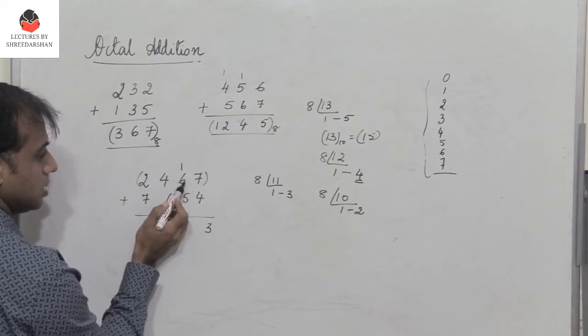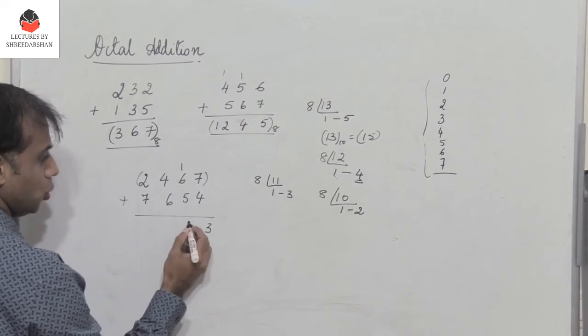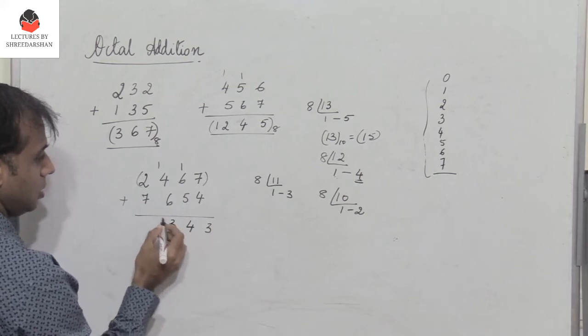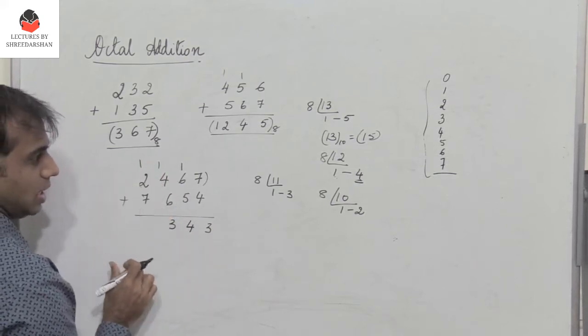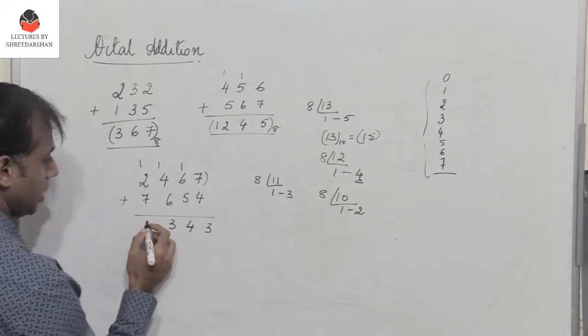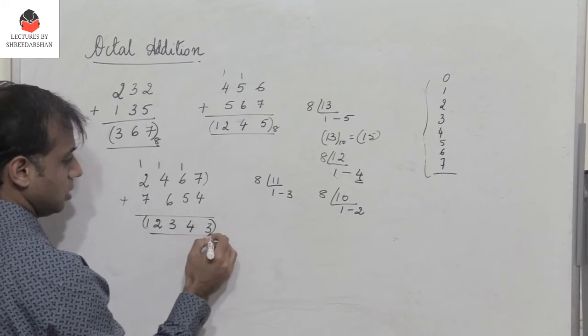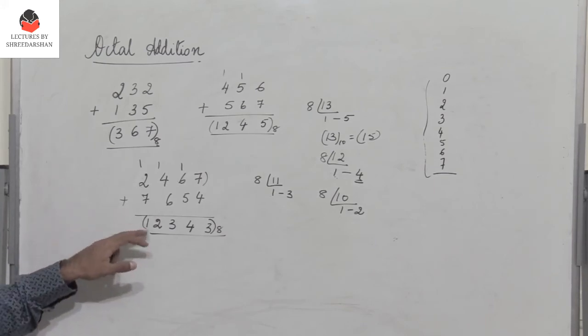Next, 5 plus 6 plus 1 is 12. The representation is 1 4. Then 6 plus 4 plus 1 is 11, which is 1 3. And 7 plus 2 plus 1 is 10, which is 1 2. So the added result is 1 2 3 4 3.